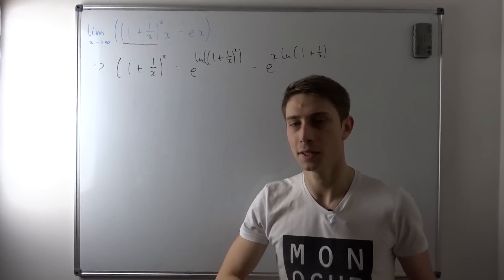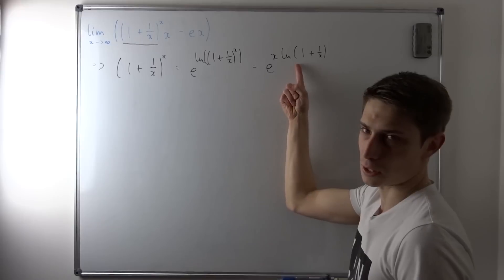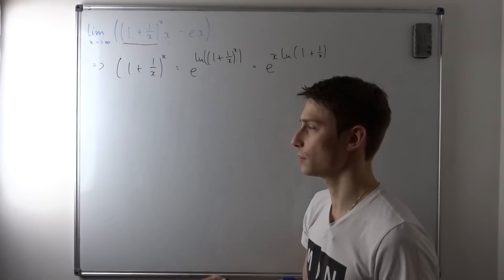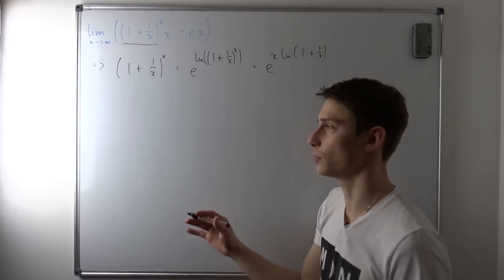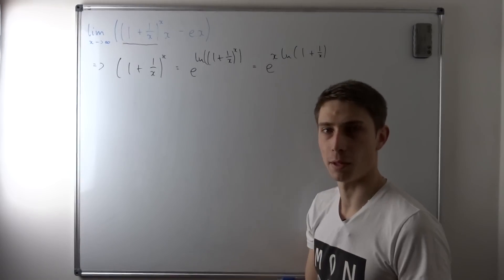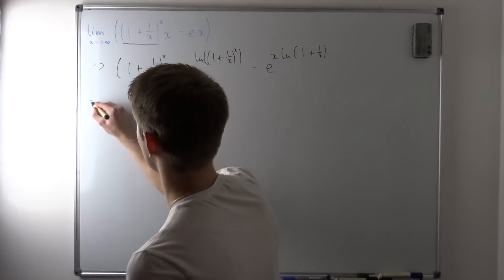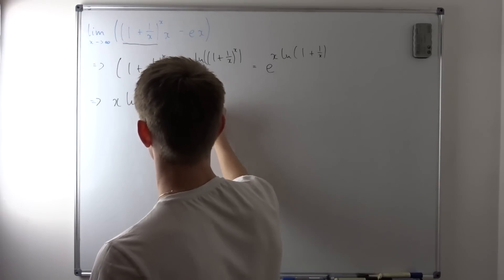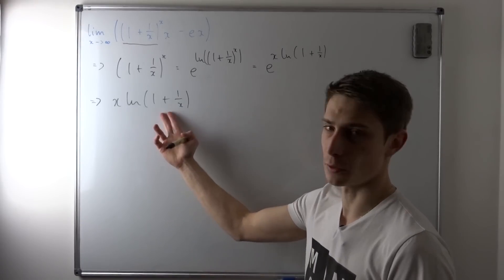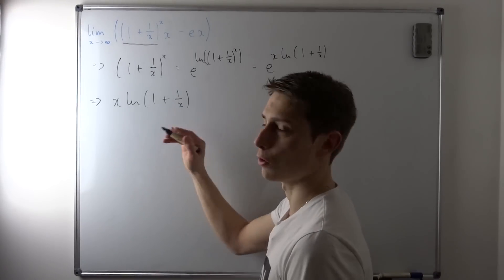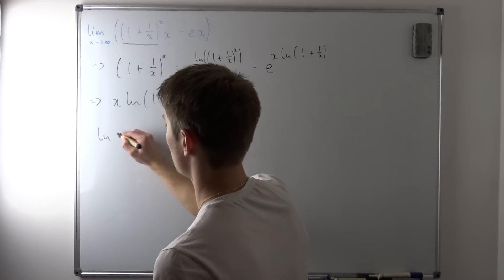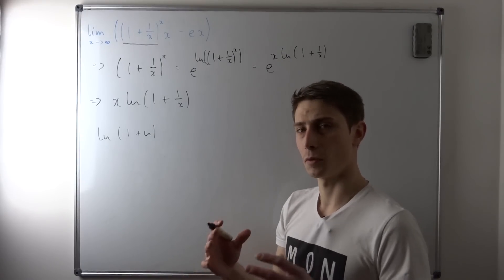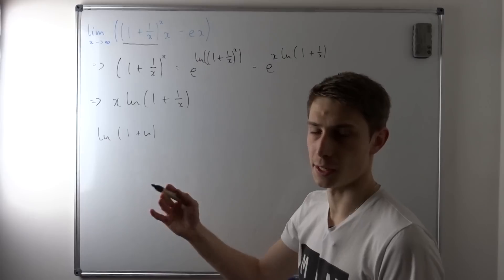This doesn't look any easier — it doesn't. Now we are going to take a look at just the exponent right here and transform it into a series. I don't want to go too deep into details; this video would take way too long. So let's take a look at x times natural log of 1 plus 1 over x. I want you to remember what the power series of ln of 1 plus u is. So ln of 1 plus u — we can represent this as a power series around zero.